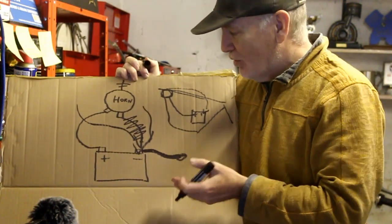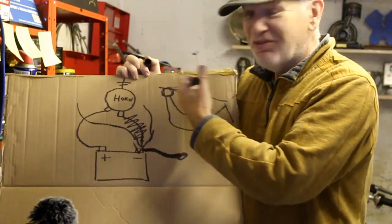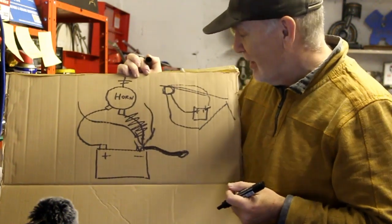So yeah, that used to confuse me, but now I understand it. Yeah, it does work very well and it does save on a lot of wiring on the bike. Why use wire to take current back to the battery when you can just use the frame? Saves a lot of wire, saves a lot of hassle.